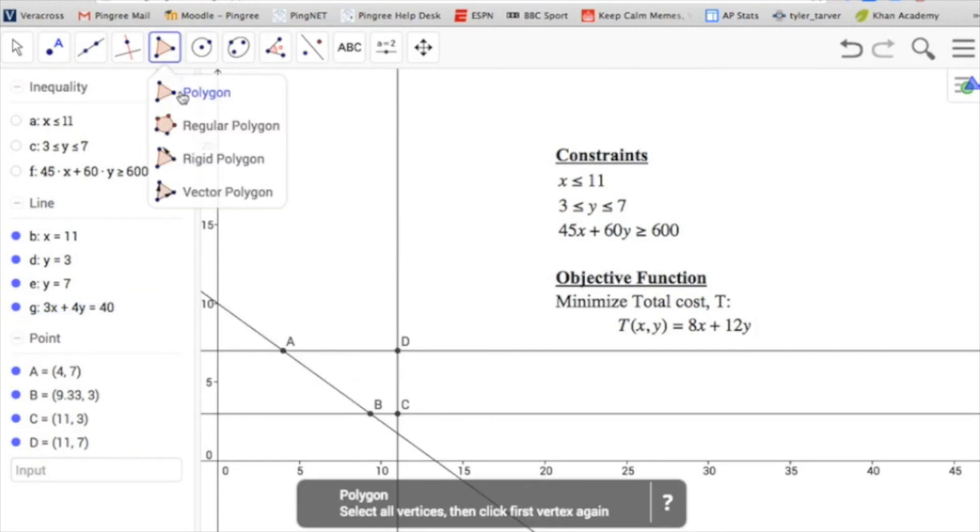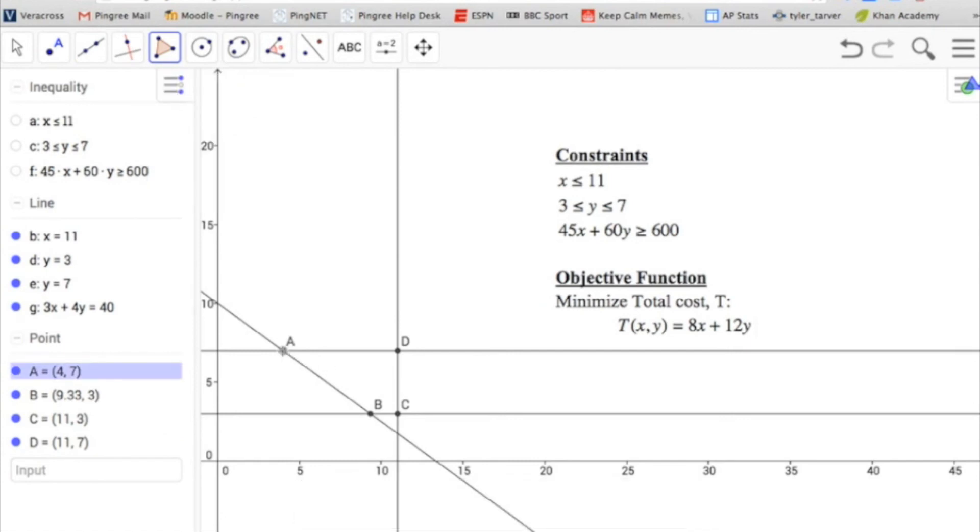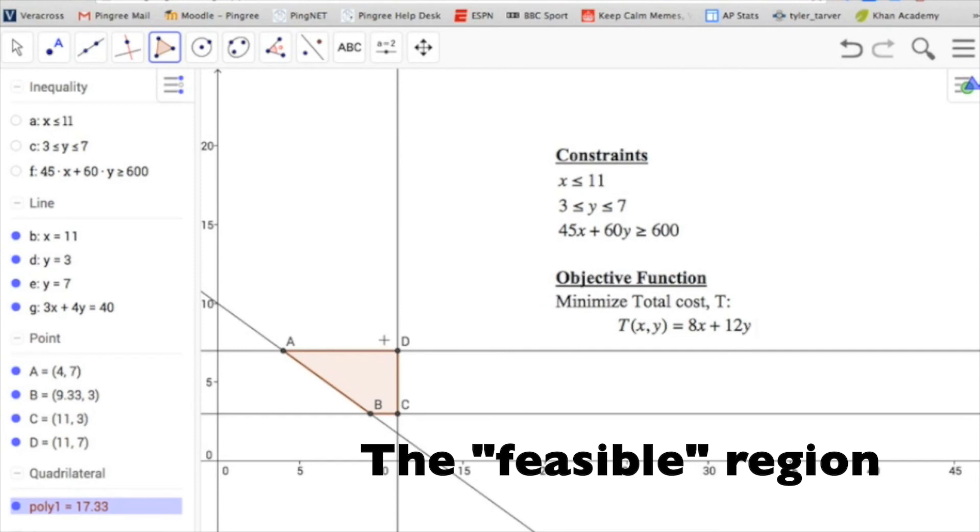If I want, I can highlight that region by creating a polygon. And I click on all four points. And I know that this is my region that I'm looking for. And these are my vertices of that region.